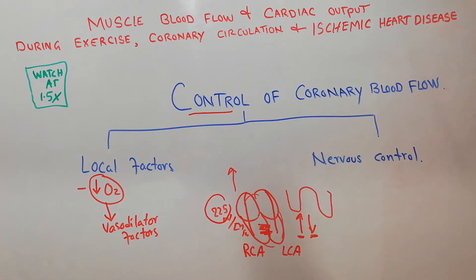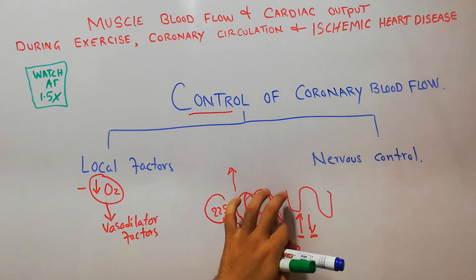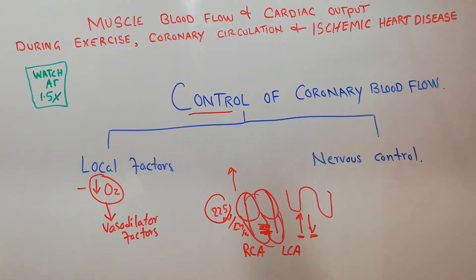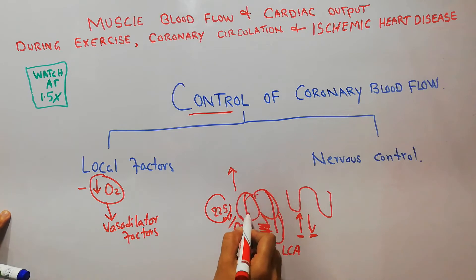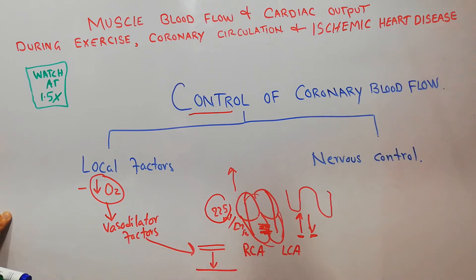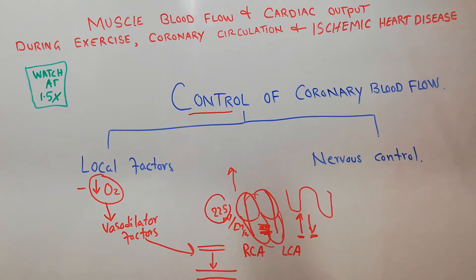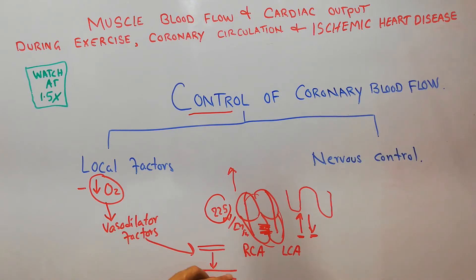Due to the decrease in oxygen, certain vasodilator factors are formed locally inside the heart muscles. These vasodilators increase the calibre of the blood vessels — they dilate them. For example, a vasodilator acting on a blood vessel increases its size so that more blood is able to flow through the dilated vessel.